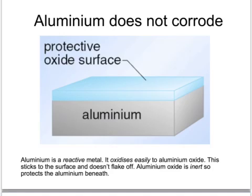It's not quite true to say that aluminium doesn't corrode because, in fact, it does. Aluminium is a very reactive metal and it combines with oxygen in the air to form a layer of aluminium oxide. But the aluminium oxide layer sticks very, very tightly to the surface of the aluminium, and this stops the air and any water coming into contact with the aluminium from then on. Also, this oxide surface layer is very unreactive and therefore doesn't dissolve in water or corrode itself. So once the aluminium has this protective oxide surface layer, it stops the aluminium from corroding any further.